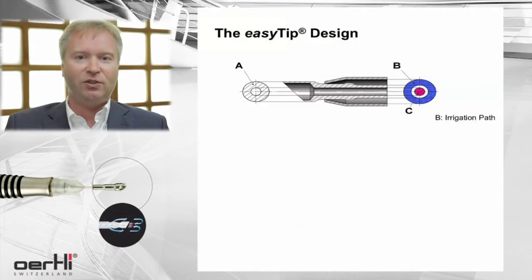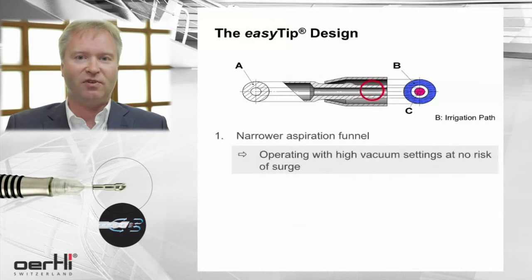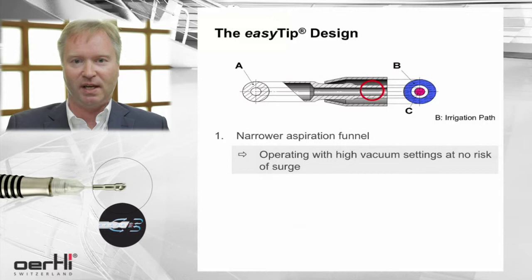With EasyFaco, the main change lies in the new design of the Faco tip. The design has been changed mainly in three ways. First, the aspiration funnel has been made narrower. And this, according to Hagen-Poiseuille's law, gives you the chance of enhancing the resistance of flow in the event of an occlusion break.